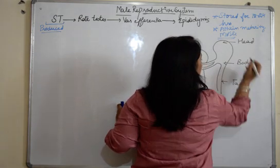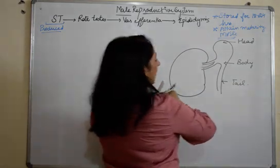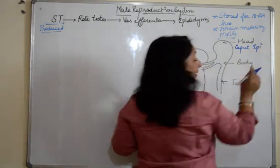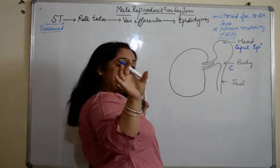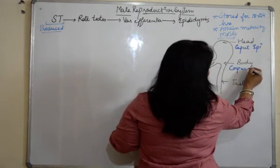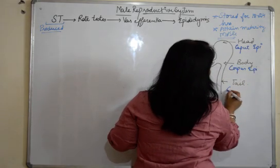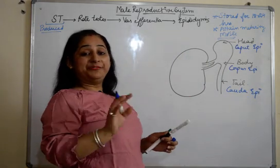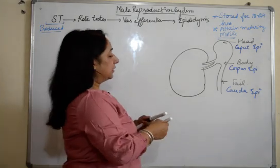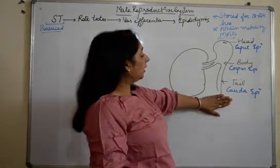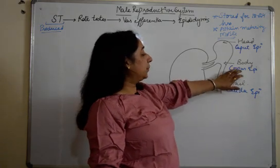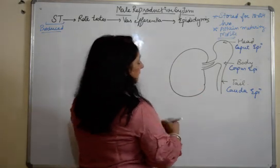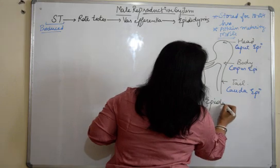The head is known as caput epididymis, the body is corpus epididymis, and the last part is cauda epididymis. You must have heard about caudal fin — the caudal fin is the rear fin of the fish, so cauda is given for the tail. So cauda epididymis is the tail, corpus epididymis is the body, and caput epididymis is the head. These are the parts of the epididymis shown in this diagram.